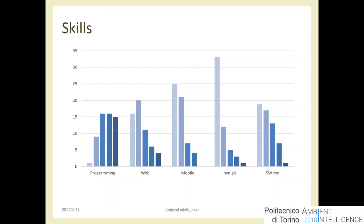The survey also asked how you feel about your knowledge of: programming in general, web programming, mobile, source control, and software requirements — on a scale of one to five. Most of you feel quite well prepared for general programming, scoring three to five. On the other topics the responses are mostly clustered at one — that's expected and we know your background.